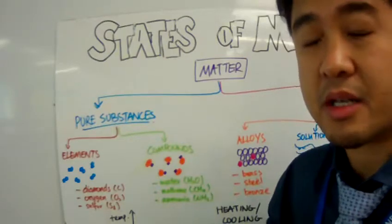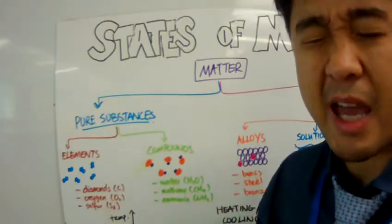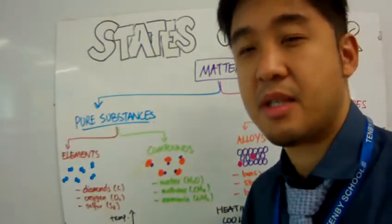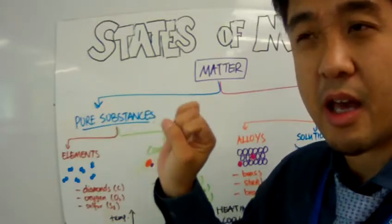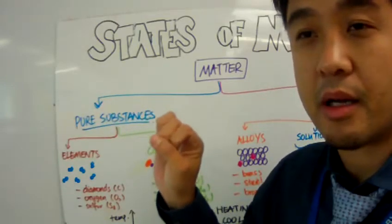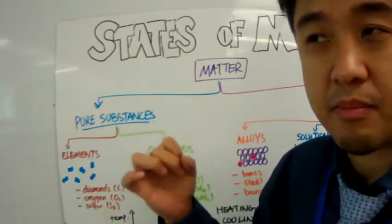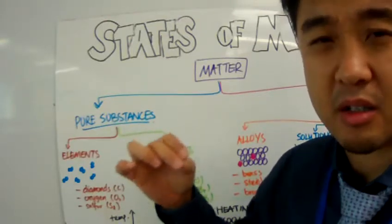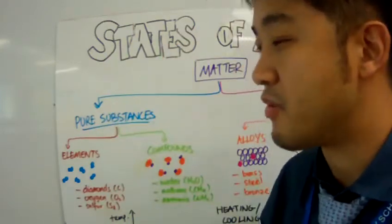Elements can also exist in a single atom by itself. For example, all these noble gases are also elements - argon, neon. Each elemental gas of argon is just one atom or one particle floating around in the atmosphere.